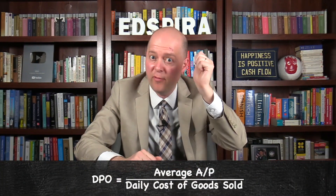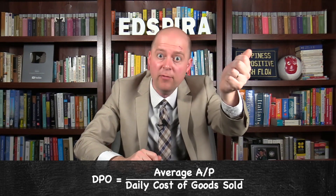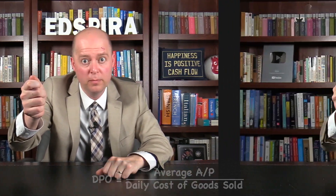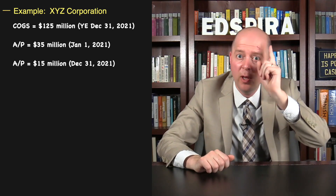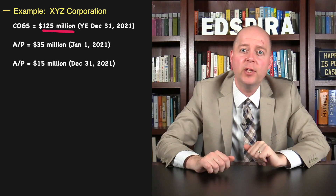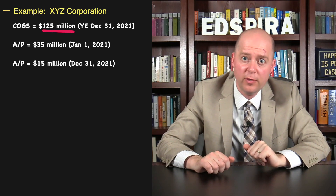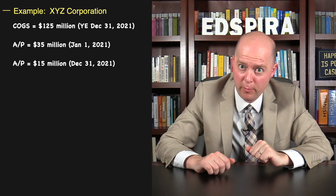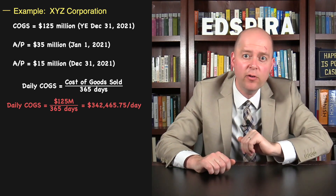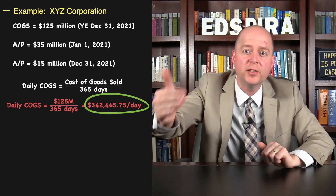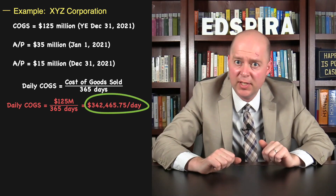Note that you can also calculate Days Payable Outstanding by dividing the company's average accounts payable by its daily Cost of Goods Sold. Returning to our previous example, XYZ Corporation reported $125 million of Cost of Goods Sold for the year-ended December 31st, 2021. Thus, its daily Cost of Goods Sold was $342,465.75.